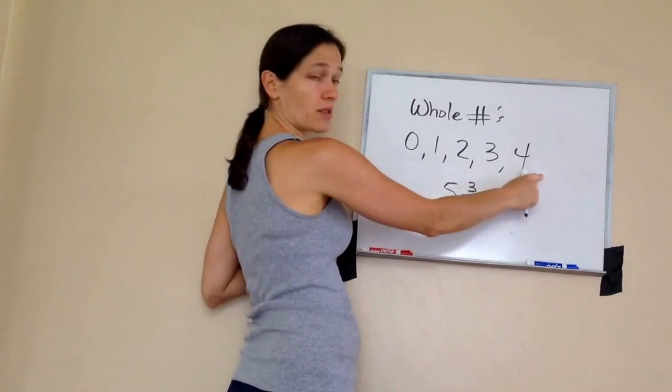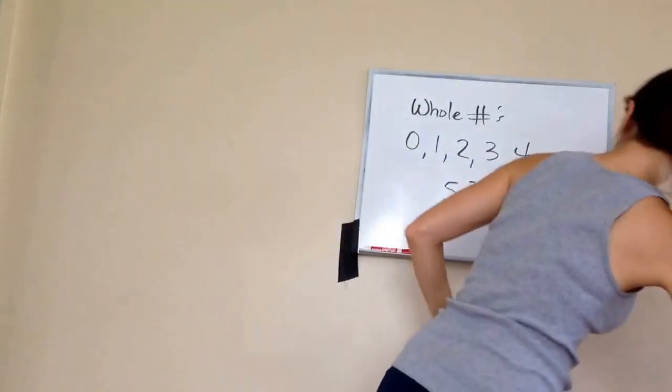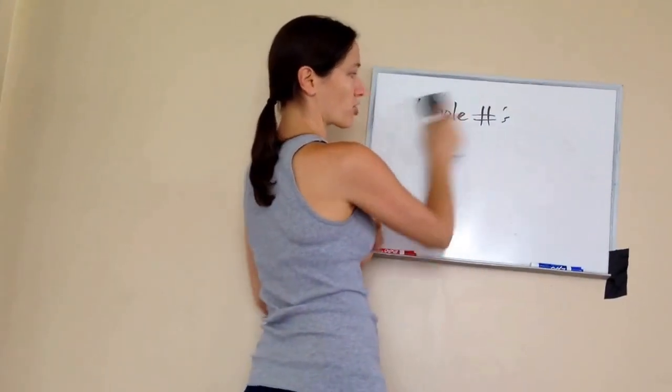Okay, so whole numbers are just these: zero, one, two, three, four. But I'm just trying to show you what a true whole number is and that you fully get it.